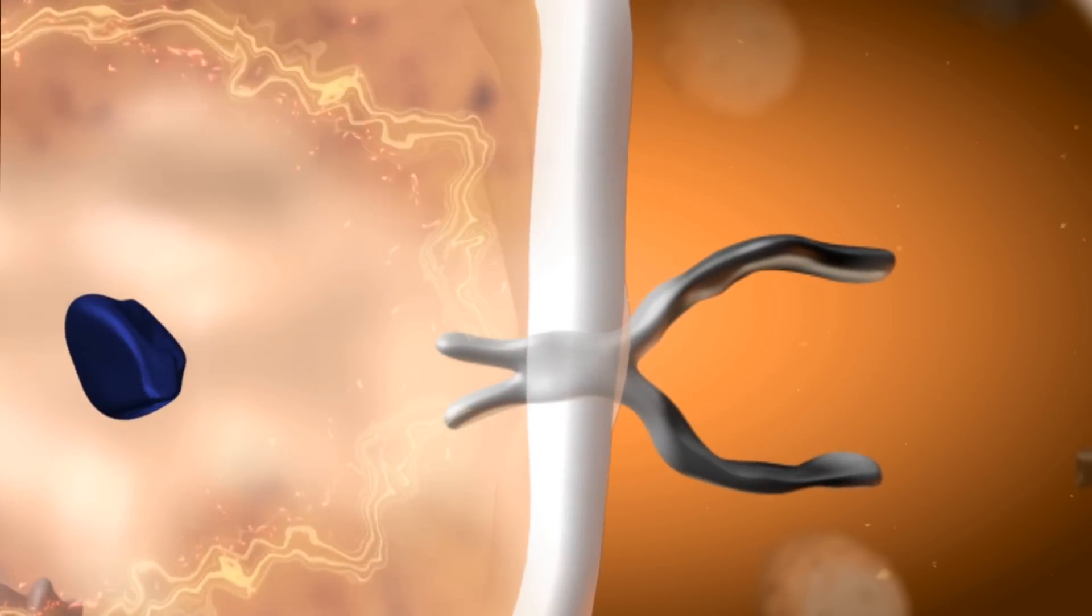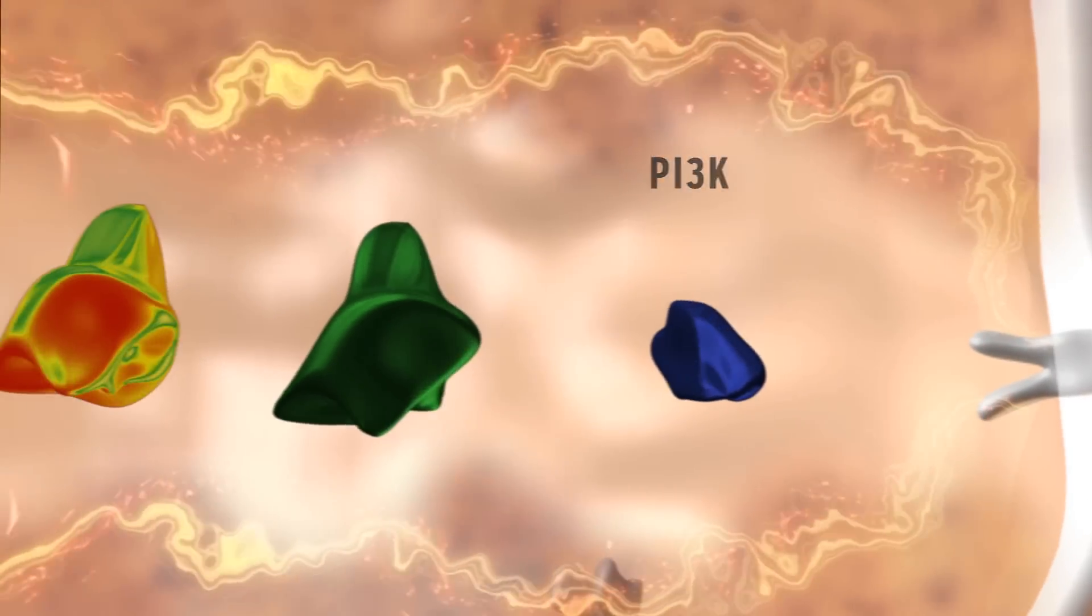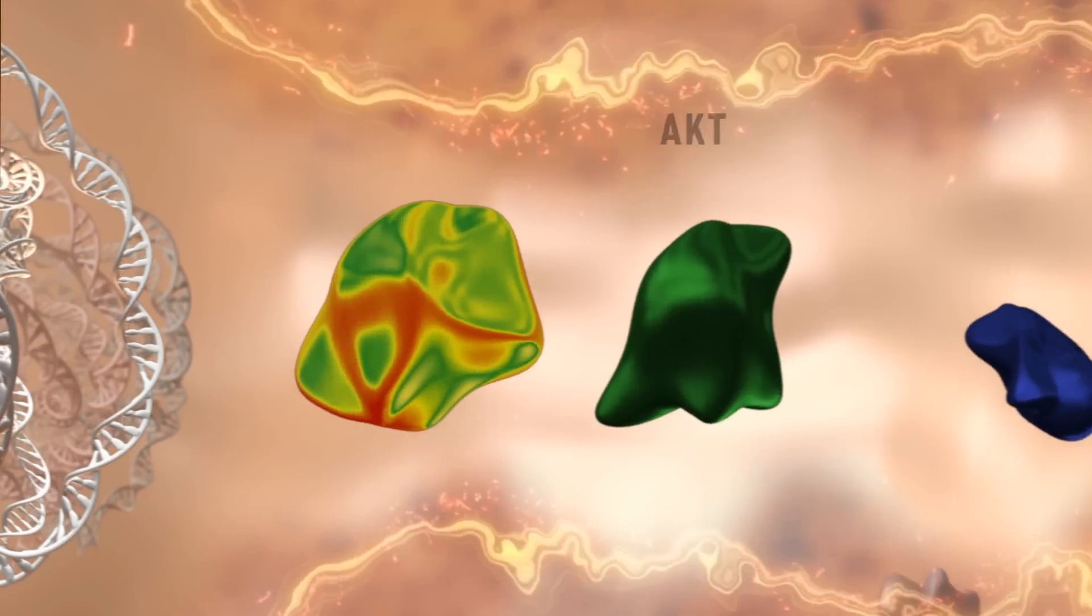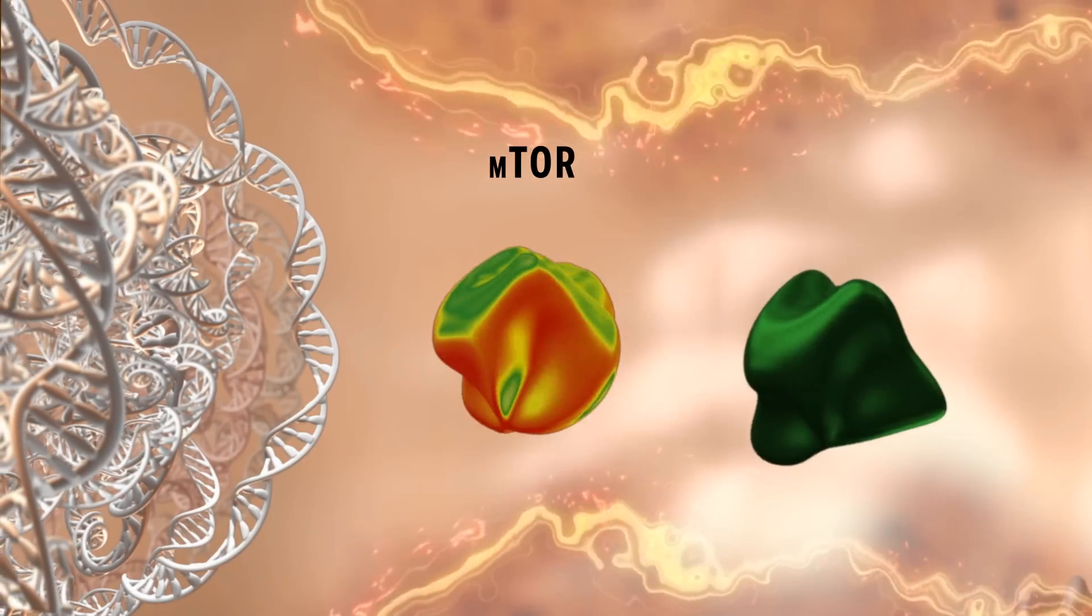PI3K-AKT signaling controls cell death and survival. AKT also signals to a few other proteins such as mTOR.